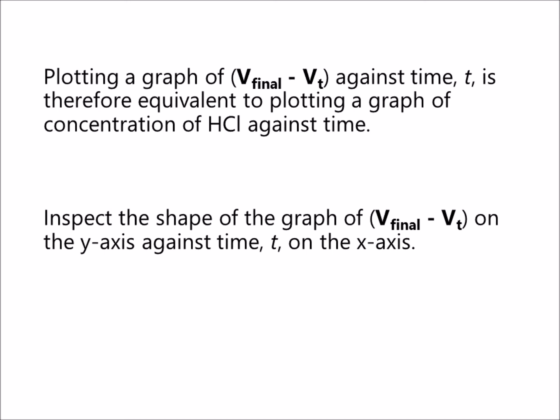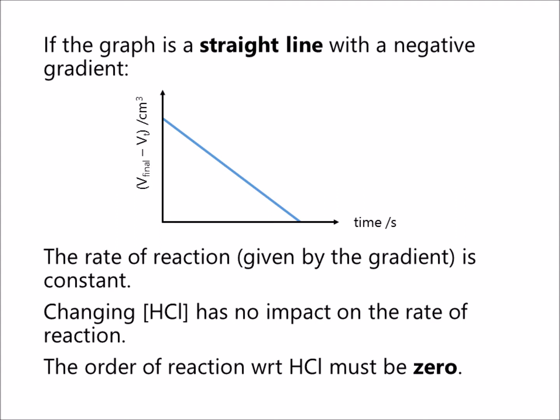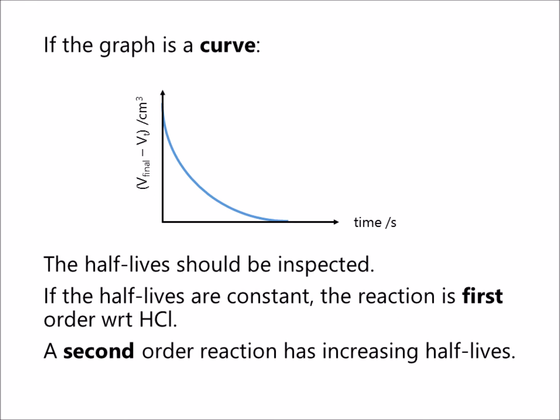Inspect the shape of the graph of V-final minus Vt on the y-axis against time t on the x-axis. If the graph is a straight line with a negative gradient, the rate of reaction given by the gradient is constant. This means changing the HCl concentration has no impact on the rate of reaction, so the order of reaction with respect to HCl must be zero. If the graph is a curve, the half-lives should be inspected. If the half-lives are constant, the reaction is first-order with respect to HCl. A second-order reaction has increasing half-lives.